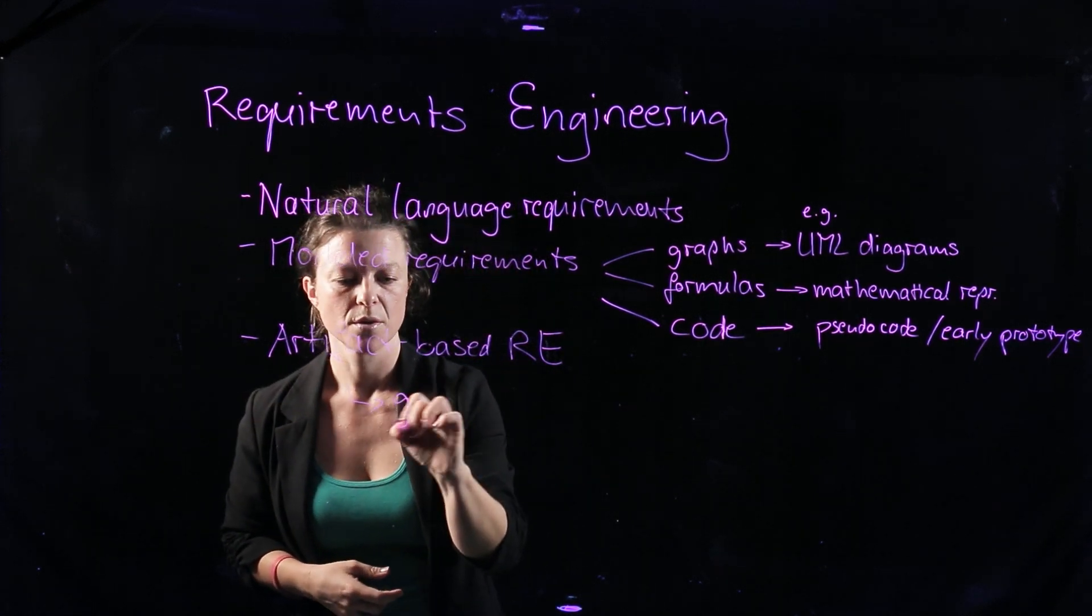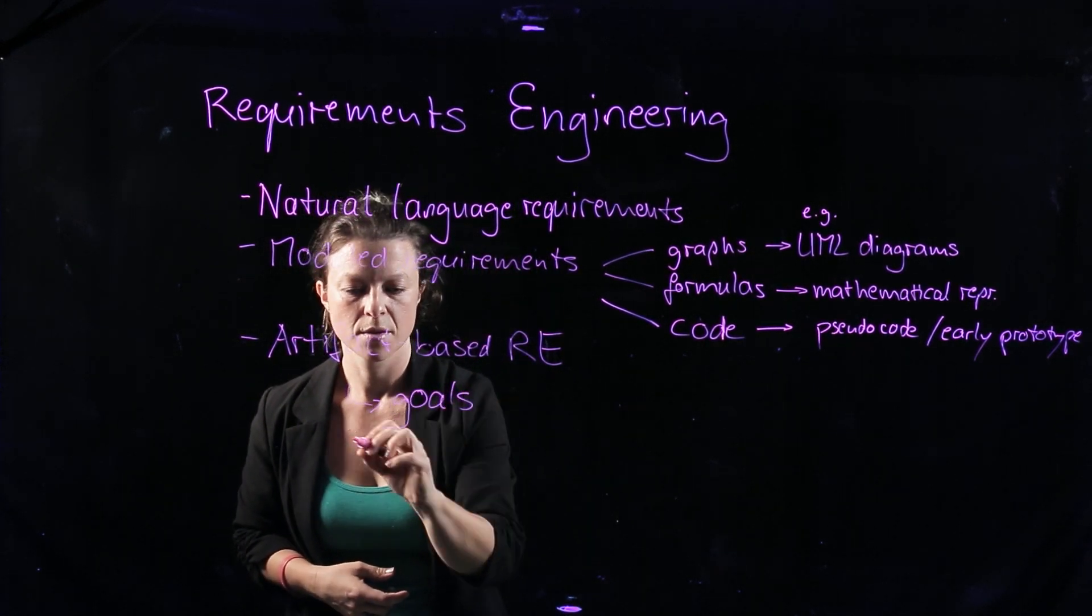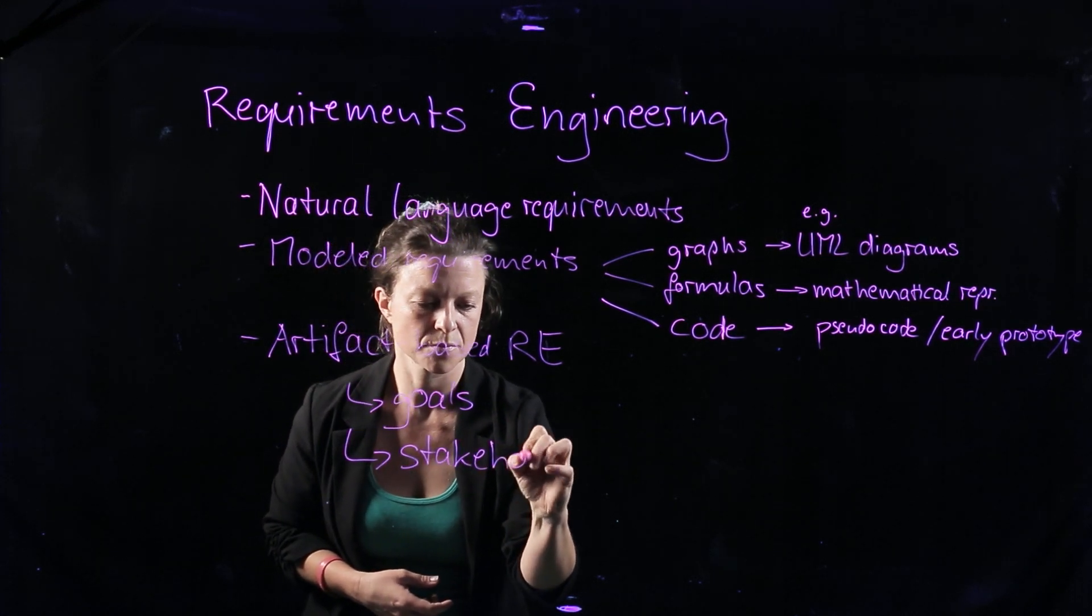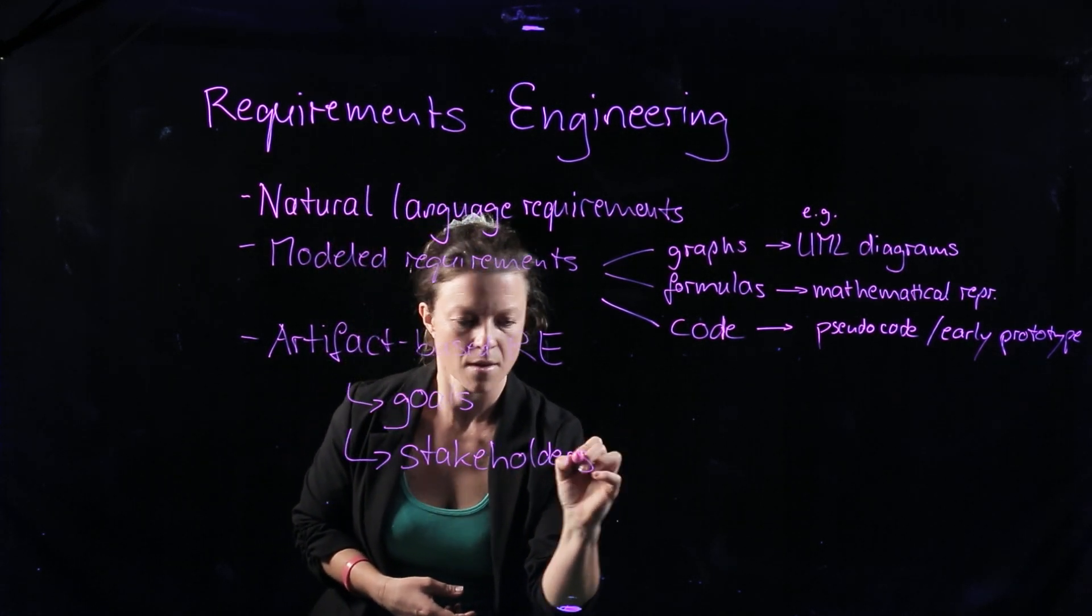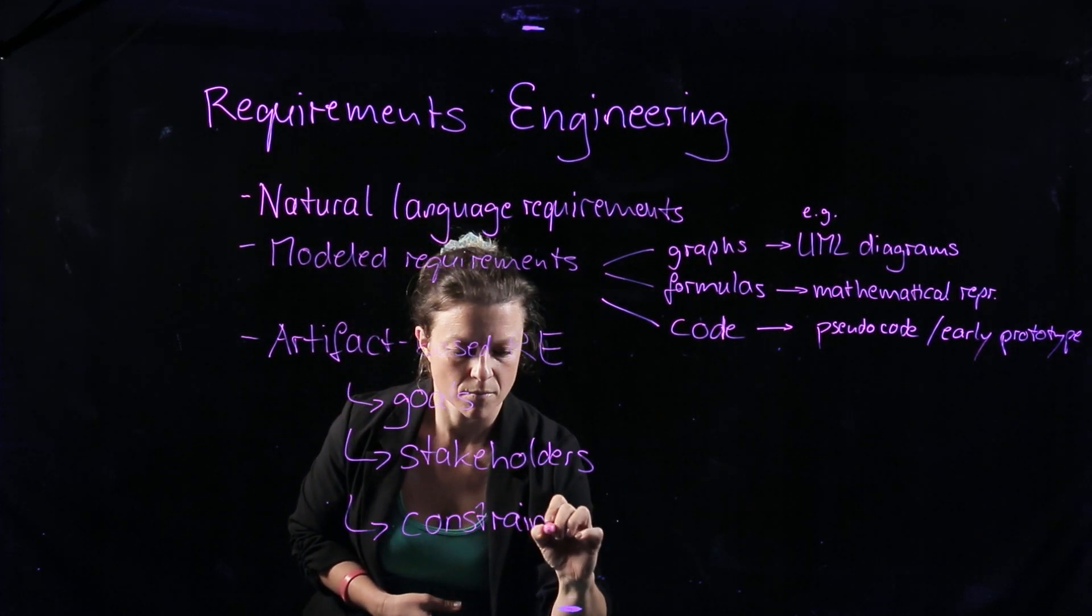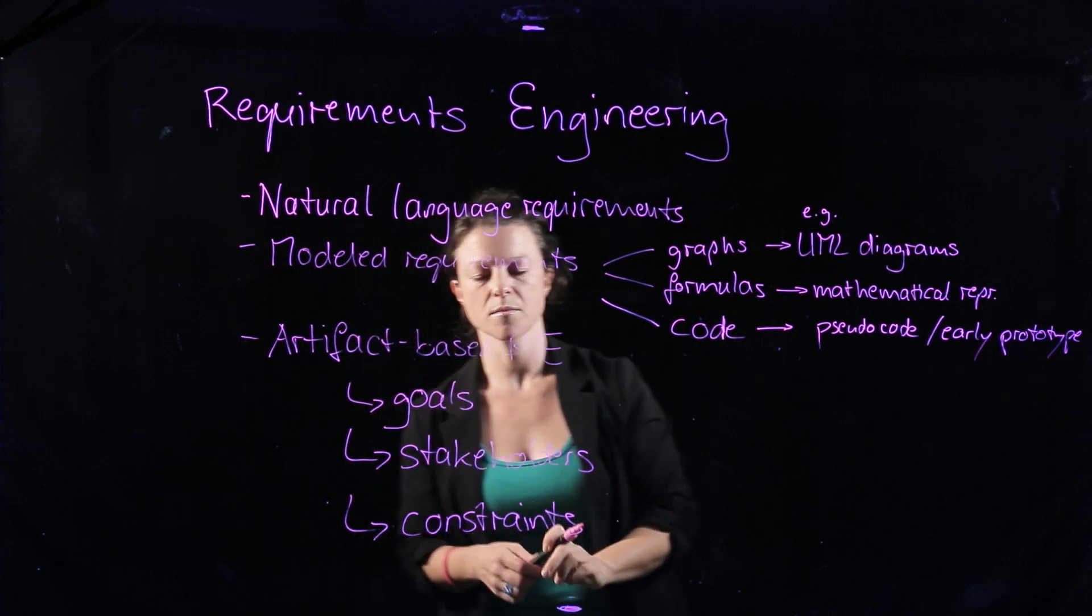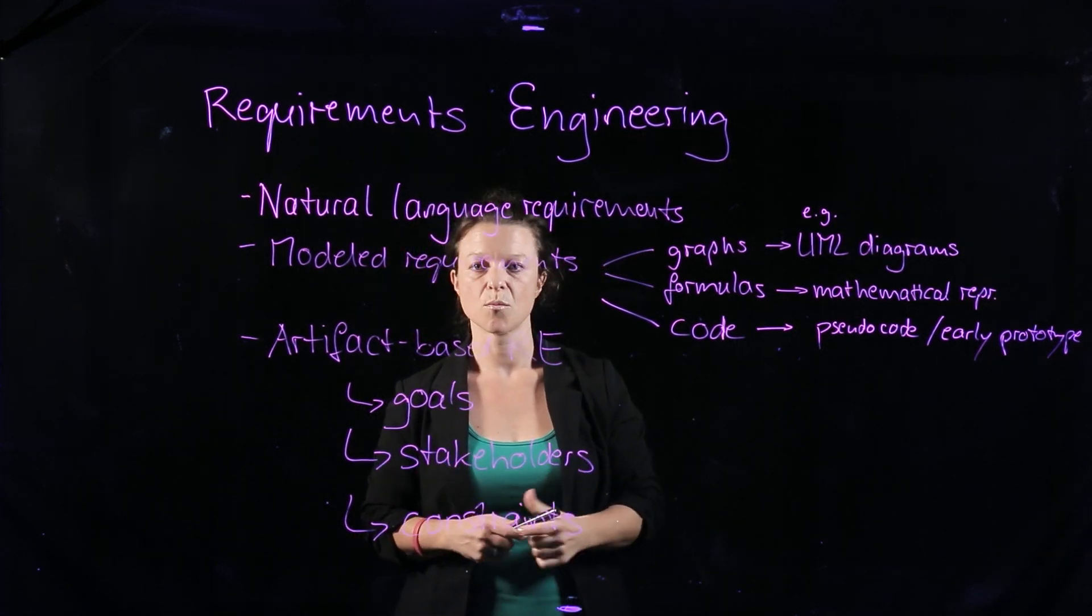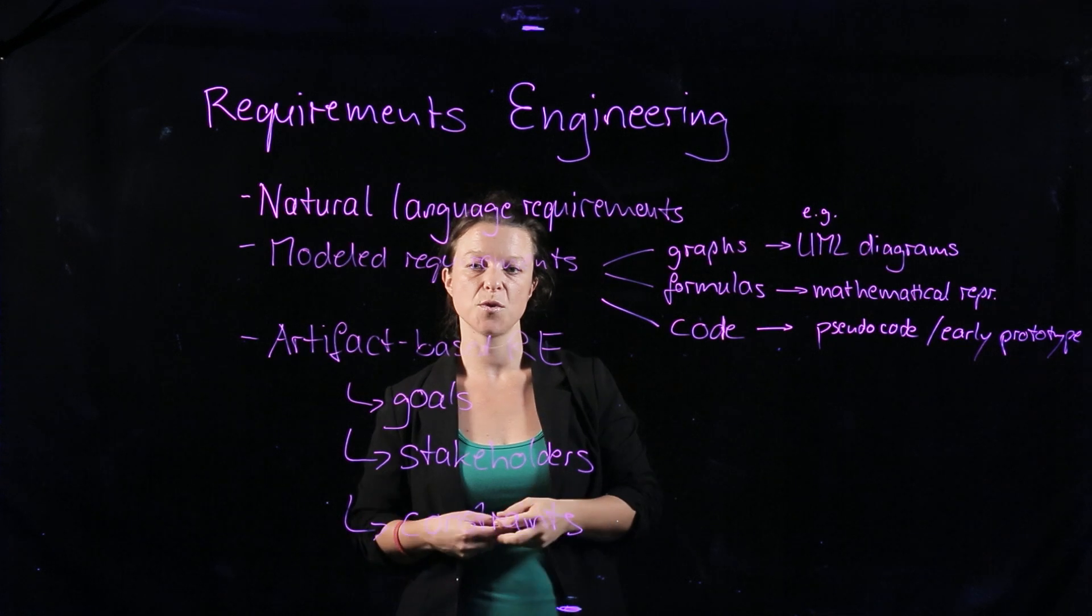So that can include goals. That can include other stakeholders. And that can be information about constraints. And we will talk about what each of these three are in more detail over the next few lessons.